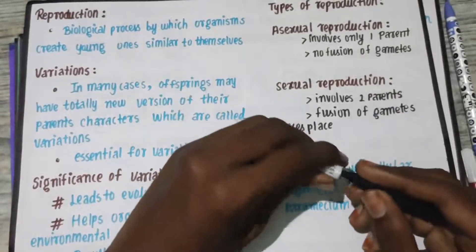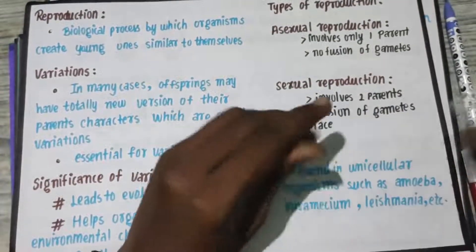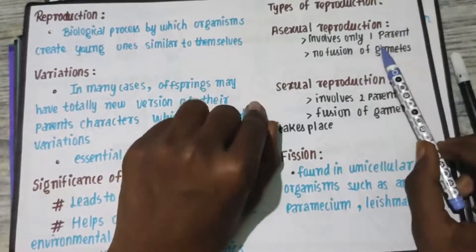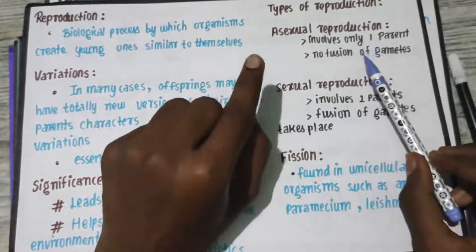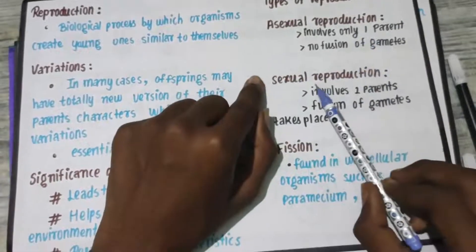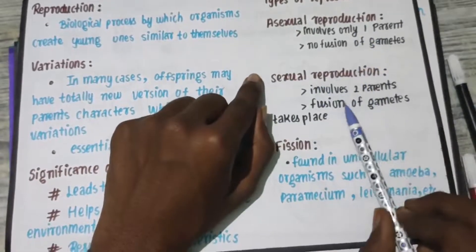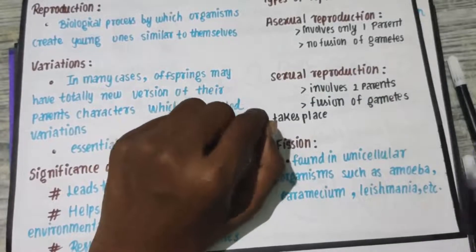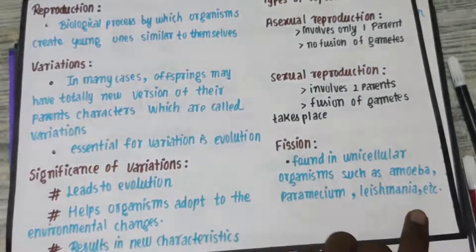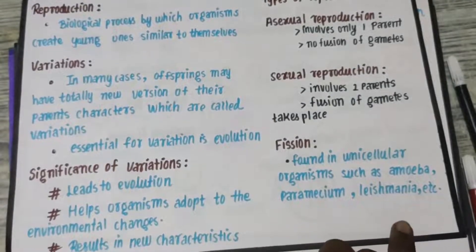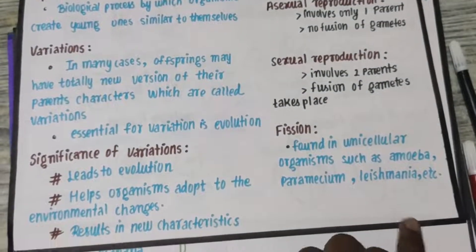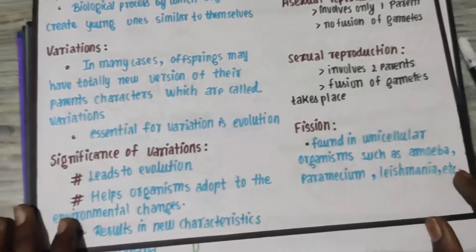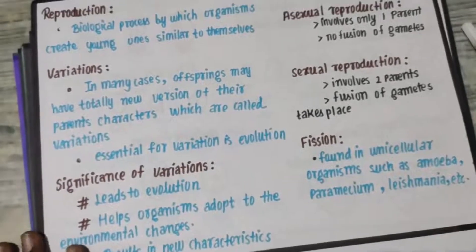Parthenogenesis involves one parent and there may be involvement of gametes, but there should be no fusion between the two gametes. Sexual reproduction involves two parents — a male parent and a female parent — and there will be a fusion of gametes between the male gametes and female gametes.